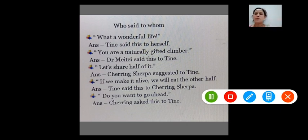Now, Who said to whom? What a wonderful life. This sentence is said by whom and to whom? Answer is, Time said this to herself. Number 2, You are a naturally gifted climber. Dr. Meethi said this to Time. Number 3, Let's share half of it. Sharing Sharpa suggested to Time. Number 5, Do you want to go ahead? Answer is, Sharing asked this to Time.